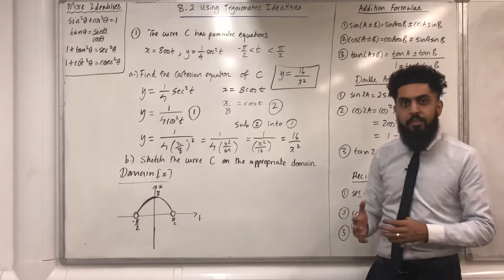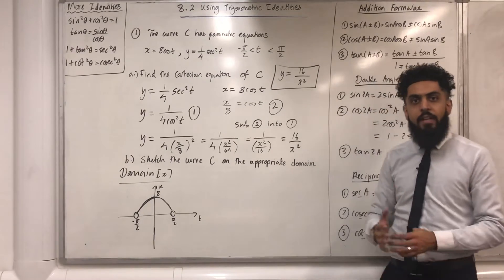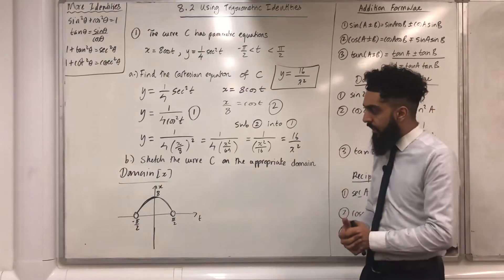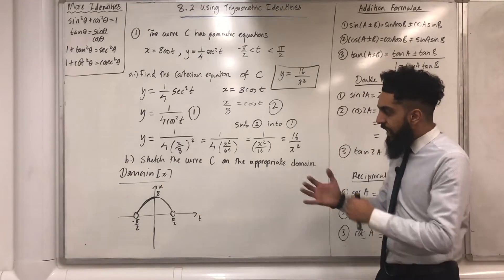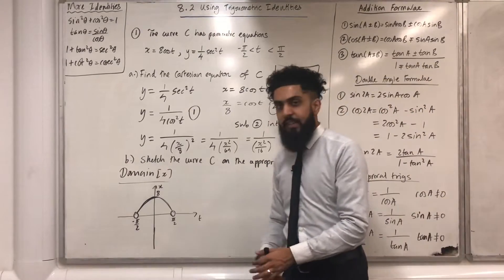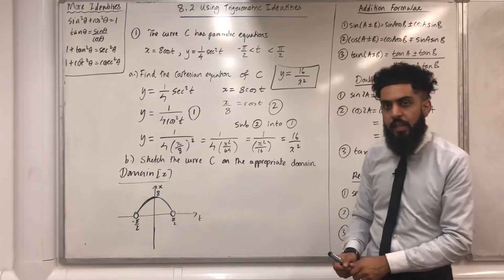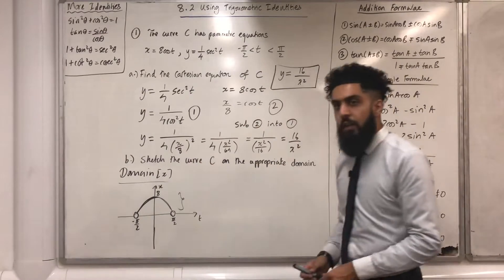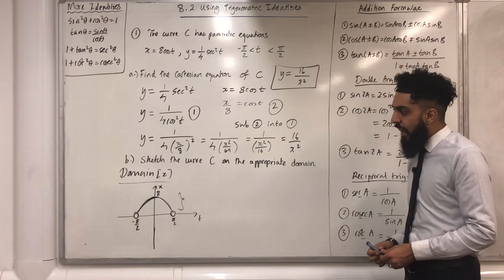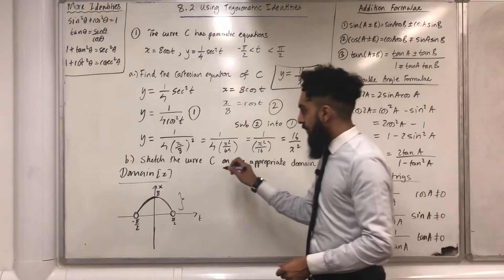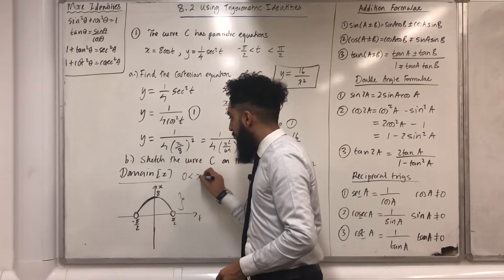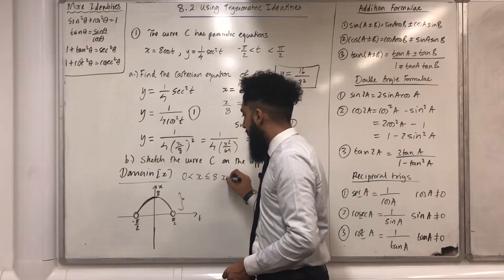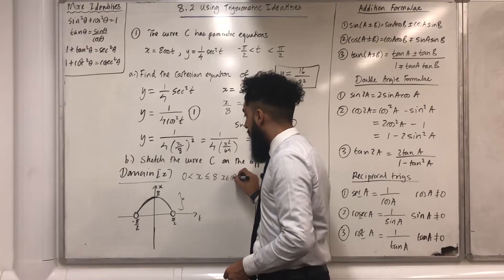To work out the domain of the curve C, I'm finding the set of possible values of x that the curve C takes. What I need to focus on is the x-axis and in particular this portion over here. By looking at that portion, I see that x will be more than 0 but less than or equal to 8. x is a real number.